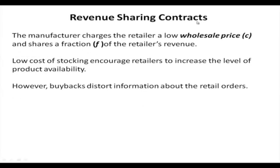In revenue sharing contracts, the manufacturer charges the retailer a low wholesale price and shares a fraction of the retailer's revenue. The retailer can buy items from the manufacturer at a low price, but the manufacturer shares a fraction of the retailer's profit. The low cost of stocking encourages retailers to increase the level of product availability by ordering larger amounts, though this also results in distortion of information about actual customer orders at the retail level.